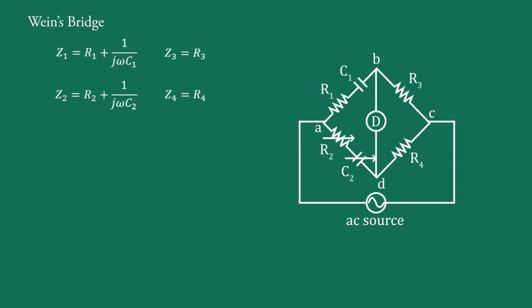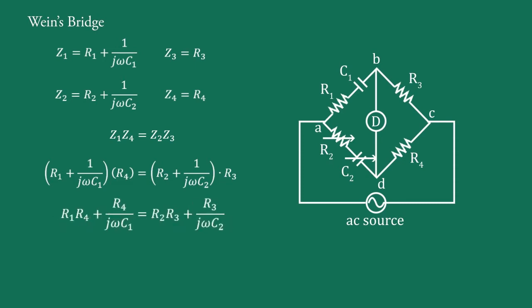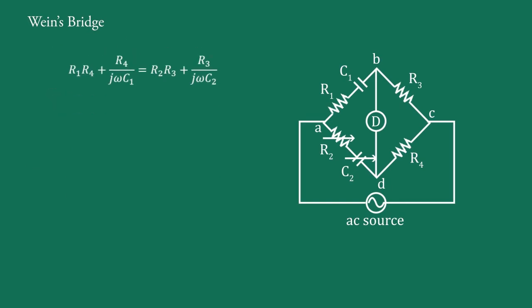Using the bridge balance condition Z1·Z4 = Z2·Z3, we have (R1 + 1/(jωC1))·R4 = (R2 + 1/(jωC2))·R3. Expanding it: R1·R4 + R4/(jωC1) = R2·R3 + R3/(jωC2).